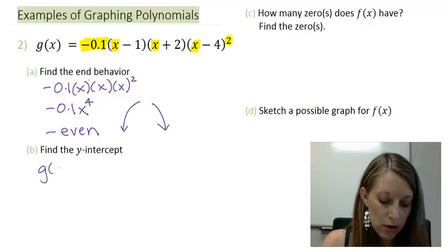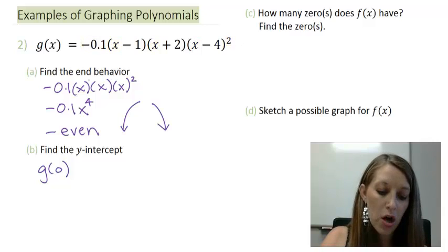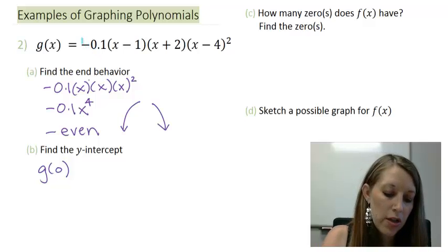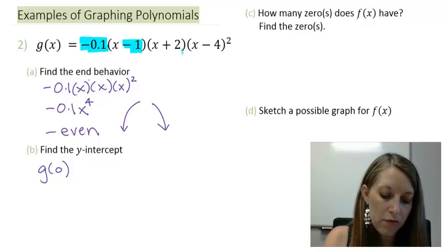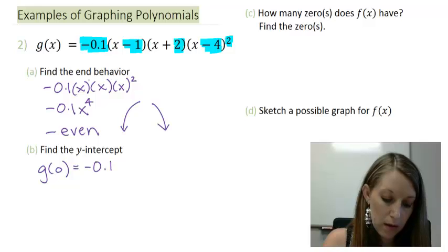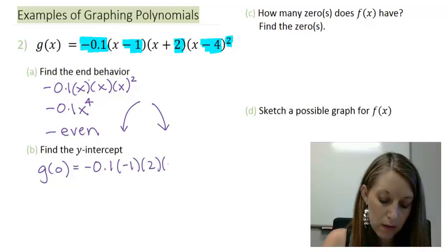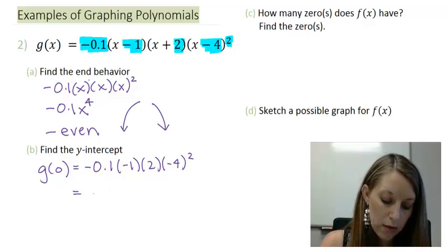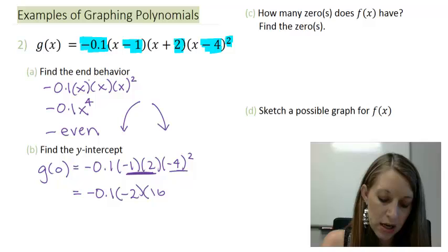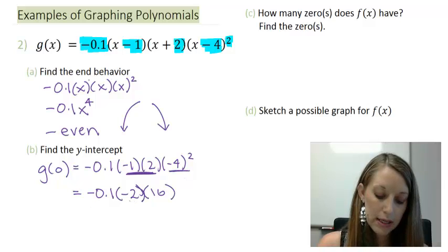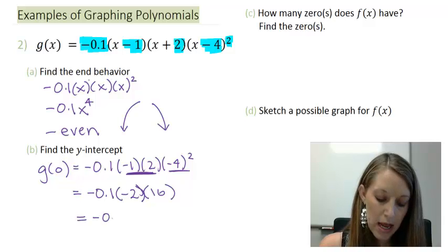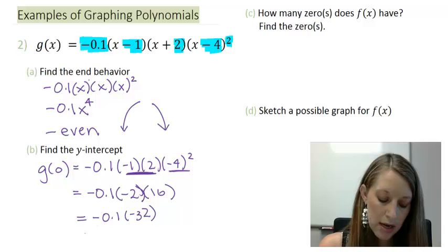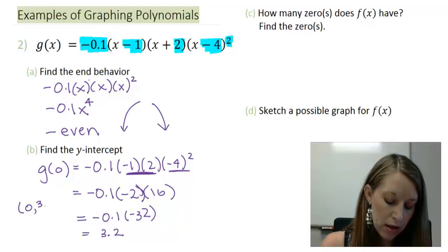The y-intercept, I plug in 0 to the equation. This time I'm going to use my constant terms, the ones without any variables attached. So that's -0.1 times -1 times 2 times (-4)². So that gives me -0.1 times -2, if I multiply these two, times a positive 16, if I square that out. 16 times -2 gives me -32, and -32 times -0.1 gives me a positive 3.2. So my y-intercept is at (0, 3.2).